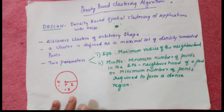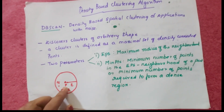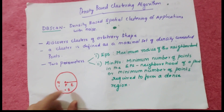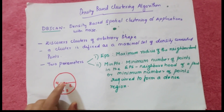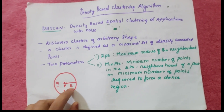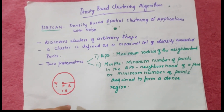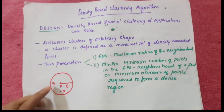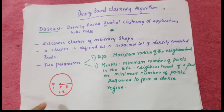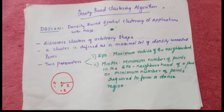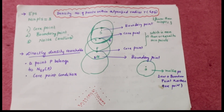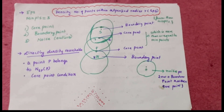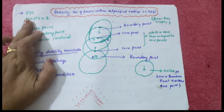Let me explain epsilon and minimum points visually. Suppose we take a center point P, with other points Q and S nearby. From the center point, we draw a circle — the radius of that circle is epsilon. Minimum point is the minimum number of points that must be inside this region. If minimum points is three, we check: one, two, three — that condition is satisfied. Density means the number of points within a specified radius epsilon.